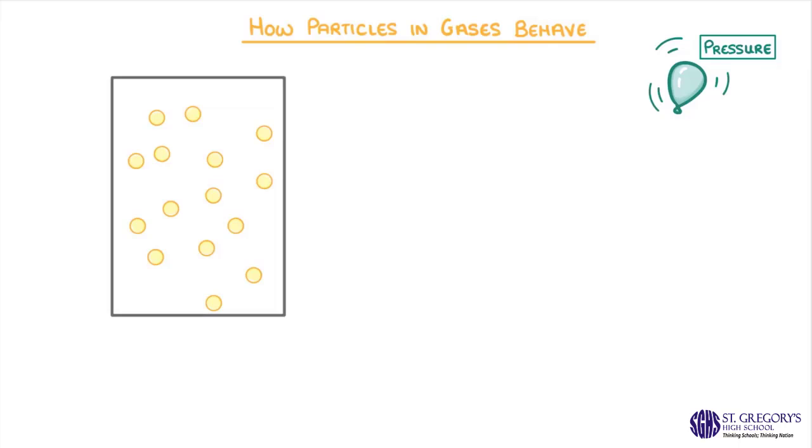If we had a container full of gas particles, the particles would be free to move about in completely random directions. And whenever they hit a wall, they would rebound and carry on in a different direction.